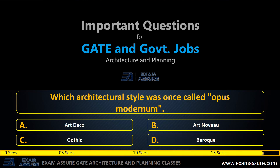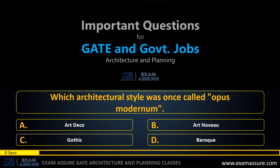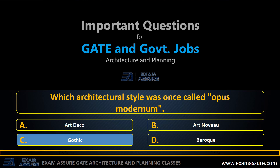Next question: which architectural style was once called Opus Modernum? Option A: Art Deco, option B: Art Nouveau, option C: Gothic, option D: Baroque. The correct answer is option C: Gothic.